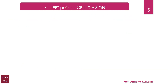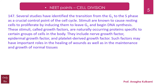Several studies have identified the transition from G1 to the S phase as a crucial control point of the cell cycle. Stimuli are known to cause resting cells to proliferate by inducing them to leave G1 and begin DNA synthesis. These stimuli, called growth factors, are naturally occurring proteins specific to certain groups of cells in the body. They include nerve growth factor, epidermal growth factor, and platelet-derived growth factor. Such factors may have important roles in the healing of wounds as well as in the maintenance and growth of normal tissues.